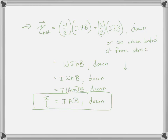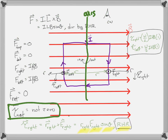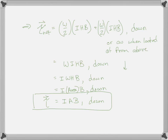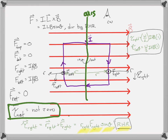Last time we were talking about the torque on a current loop in a magnetic field. For this current loop in this magnetic field, we find that the torque is IAB in the downward direction, meaning that it rotates in the sense of the central arrow here.